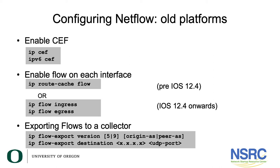To export flows to a collector, we use 'ip flow export version', specifying version 5 or 9, and then whether we include the origin AS or the peer AS — that's especially useful if we're using BGP on our network. We also specify the destination: the IP address and which UDP port the collector is listening on.